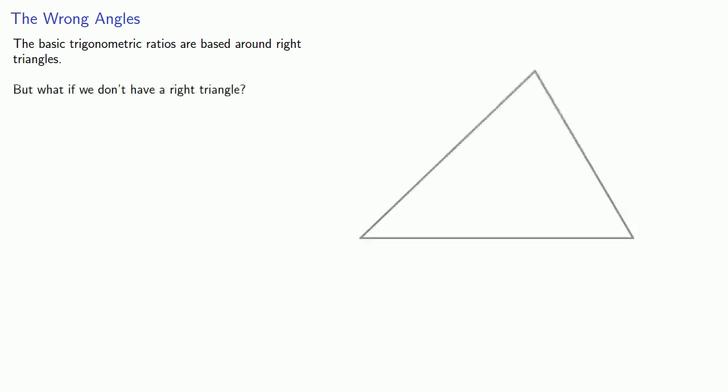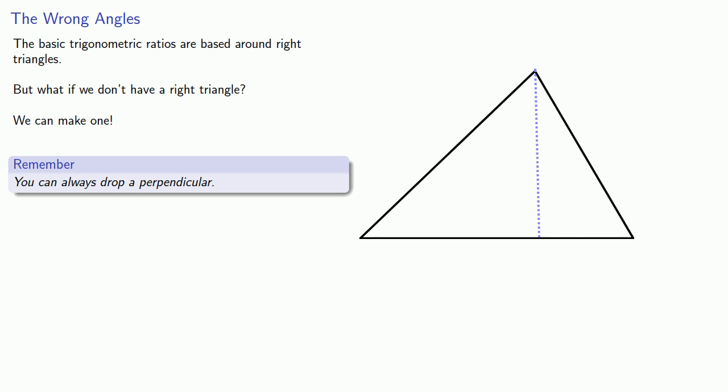The problem is this: the basic trigonometric ratios are based around right triangles. But what if we don't have a right triangle? No problem. We can make one, and that's because we can always drop a perpendicular line. You'll go through the details in an assignment. If we do that, we obtain two important relationships between the sides and angles of any triangle.